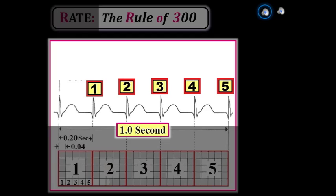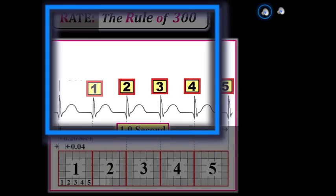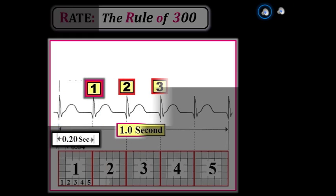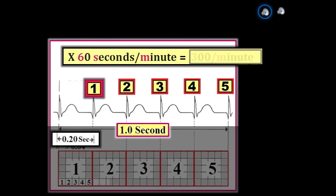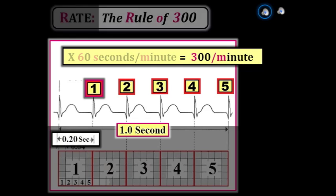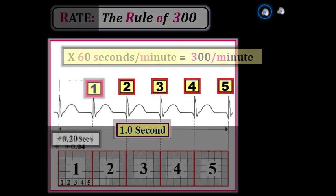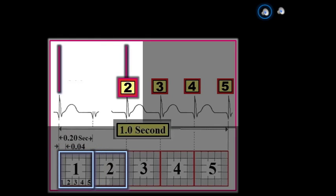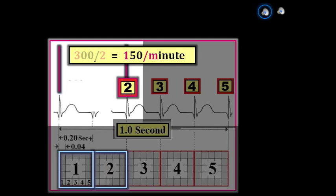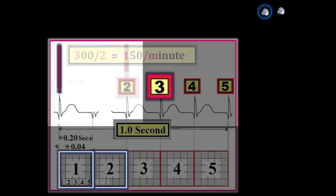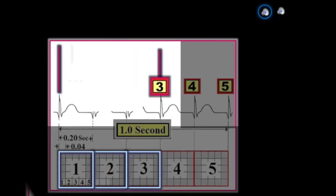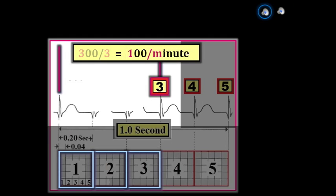Applying the Rule of 300: if a complex occurs every large box — every one-fifth of a second — then five complexes occur per second, times 60 equals a rate of 300 per minute. If a QRS occurs every two large boxes, the rate is 300 divided by 2, or 150 per minute. Every three large boxes gives 300 divided by 3, or 100 per minute. Every four large boxes gives 75 per minute, and every five large boxes gives 60 per minute. That's the Rule of 300.